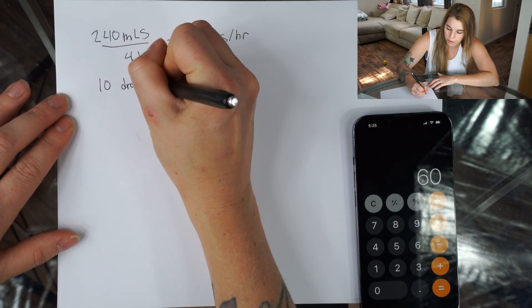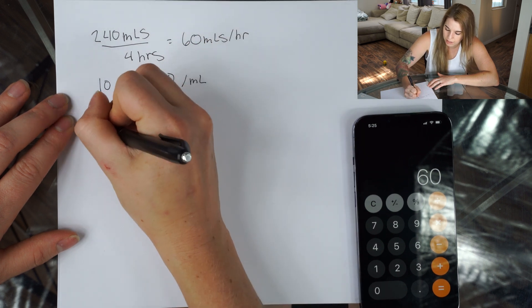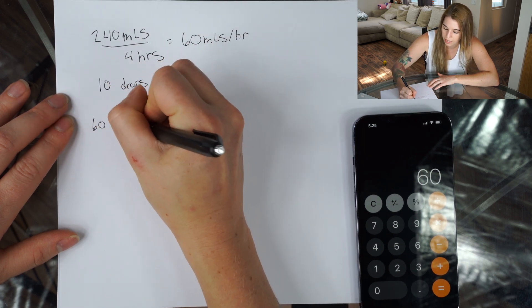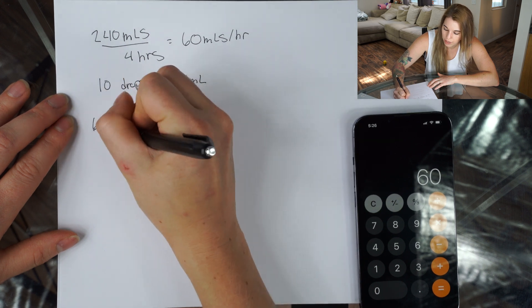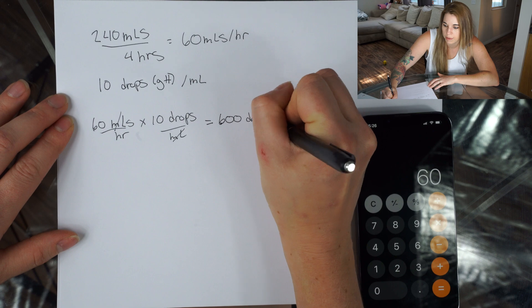We're administering this as a drip rate. Most blood transfusion sets are either 10 or 15 drops per mil. In this scenario, let's pretend we're working with an administration set that's 10 drops per mil, just for simplicity's sake. So we have to convert our mils per hour into drops per hour: 60 mils times 10 drops per mil equals 600 drops per hour.